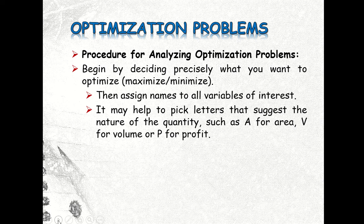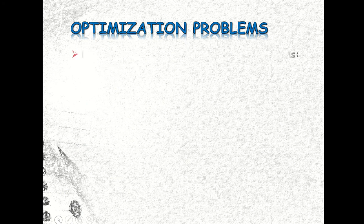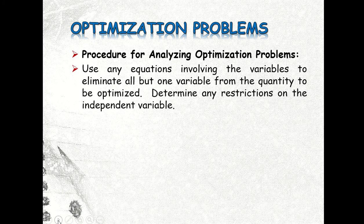Next, we need to draw a figure if appropriate and find an expression for the quantity to be maximized. Through that, use any equations involving the variables to eliminate all but one variable from the quantity to be optimized. There are times when you express something, usually we have one, two, or more variables. But to help us solve it easily, we have to express one variable in terms of the other to make our expression having one variable only.